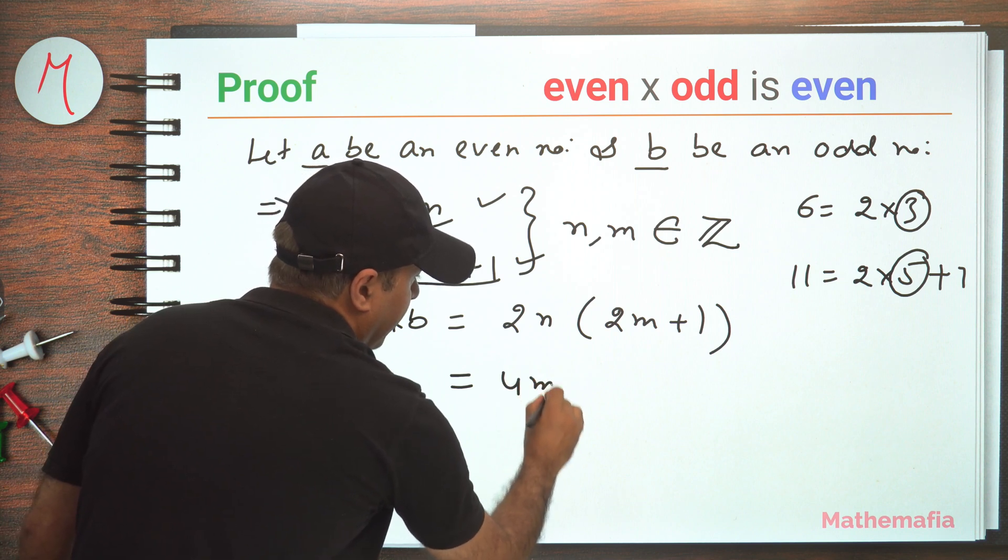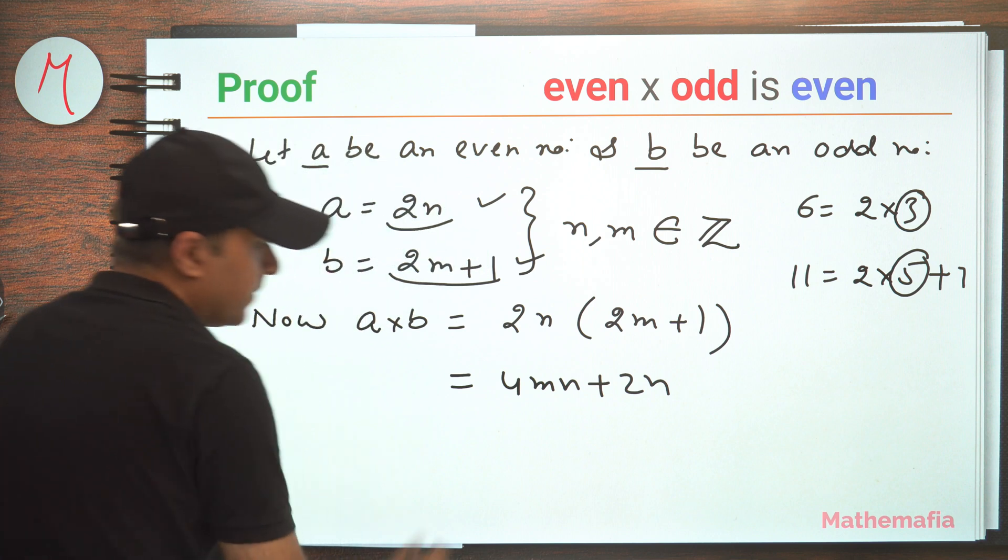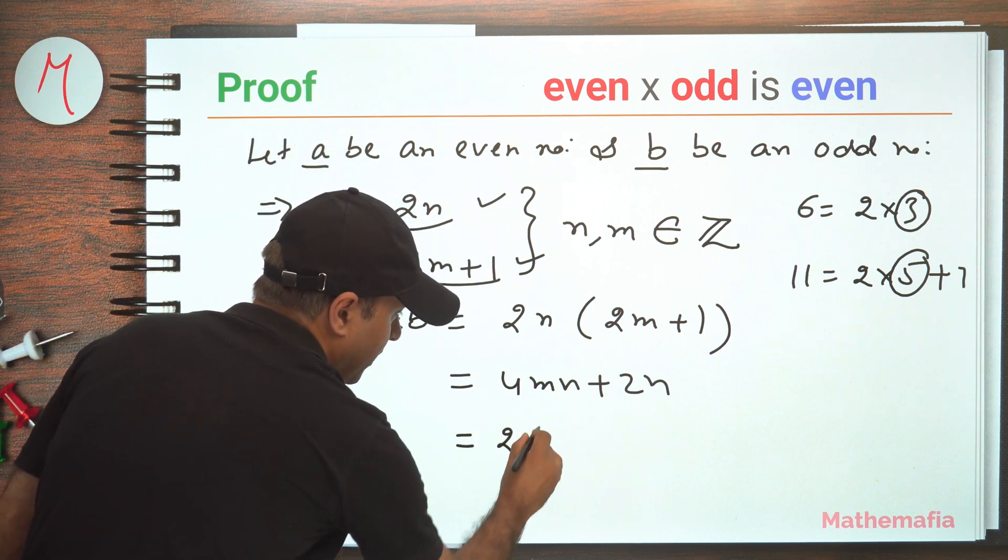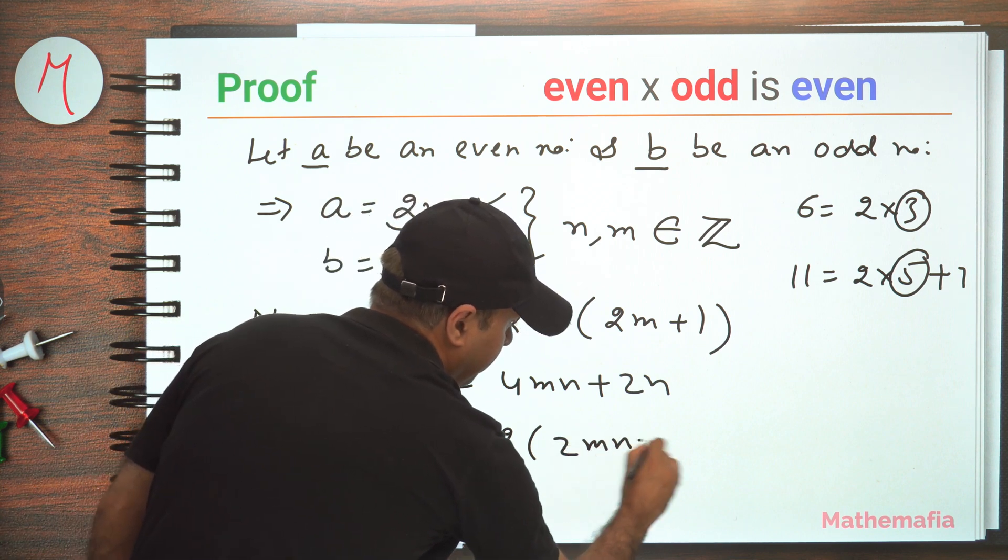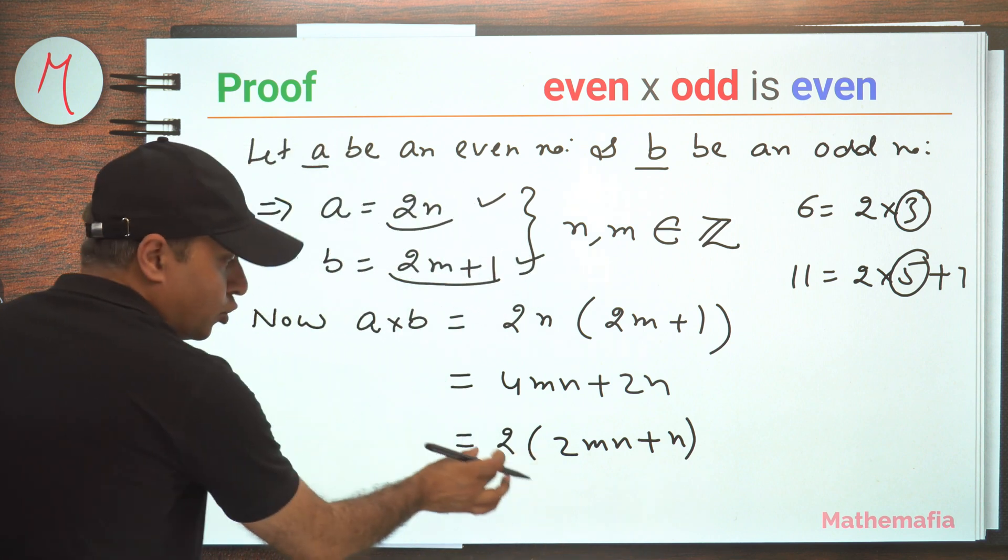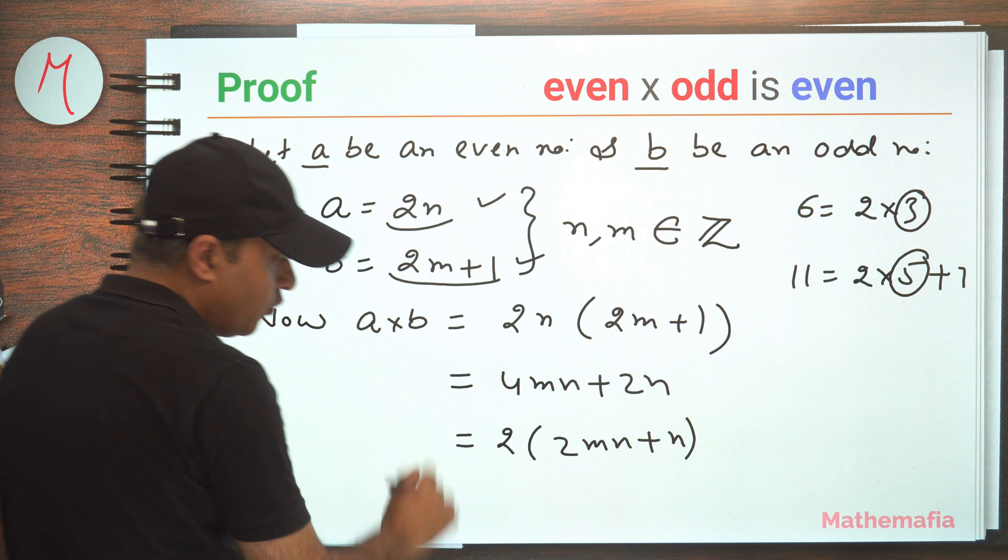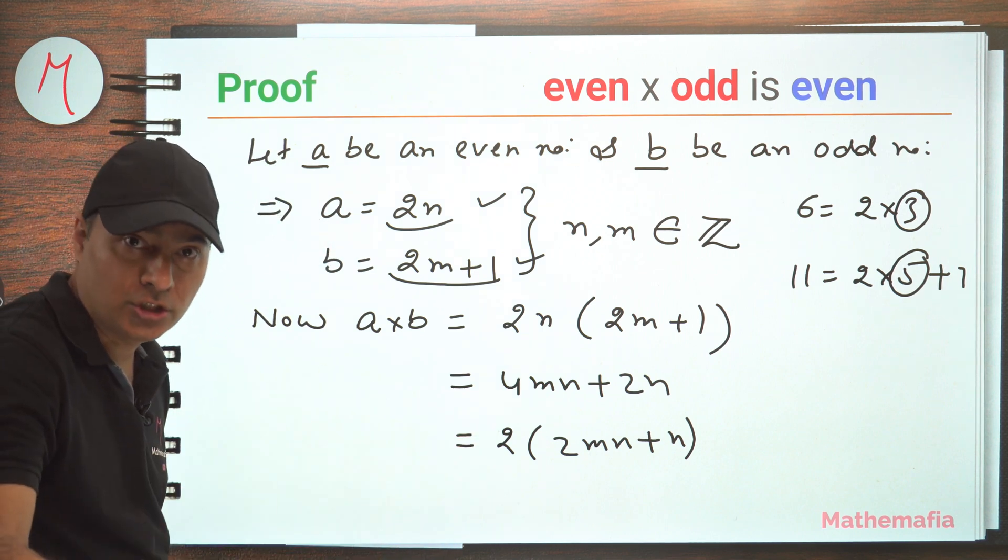So it will become 4mn plus 2n. Now this is an even number, this is an even number. So let's take 2 common, and inside it will remain 2mn plus n. I just took 2 outside only 2, because I just want to prove that this is again of the form 2 into an integer.